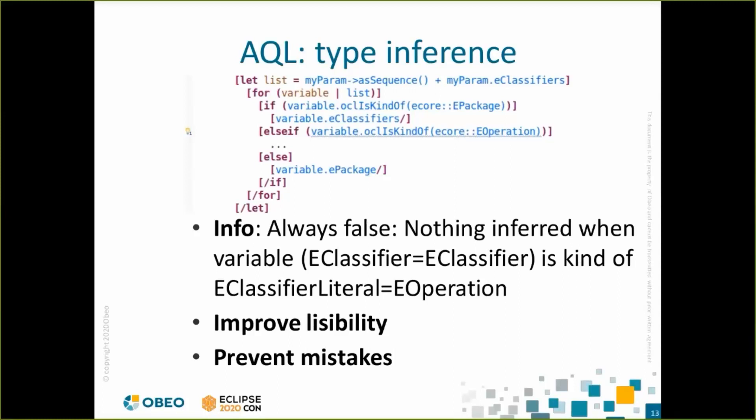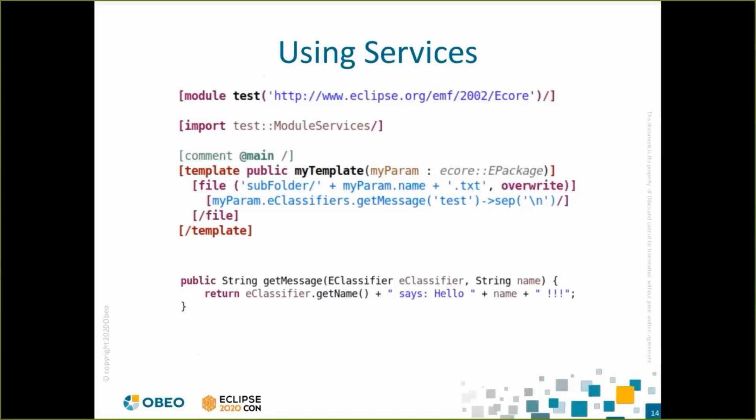When you need to implement complex behavior, you can use services. Services are Java methods. To use them in Acceleo 4, you need to import the service class, and then you can call the service directly, like the getMessage service in this example. At the bottom, you have the implementation of the service that returns a string, but it could return any type of object.